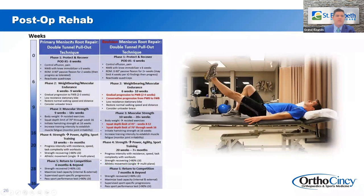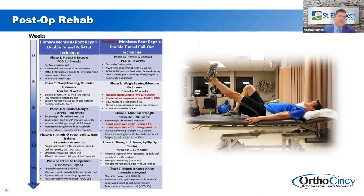For post-op rehab, focusing on primary meniscal root repair: there is varying data on non-weight-bearing duration, but I make my patients strictly non-weight-bearing for four weeks. Starting week five, they go to 25% weight-bearing — I have them put their foot on a scale to get an idea of what 25% of their weight feels like. By week six they can be 50%, and from six to eight weeks they lean off crutches completely. From six to nine weeks they can get on a bike, restoring normal balance, speed, and distance.